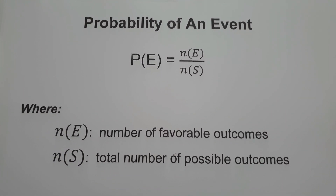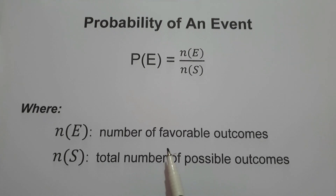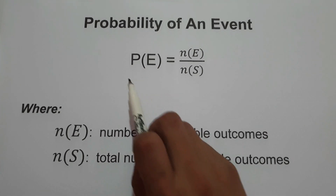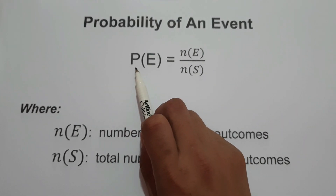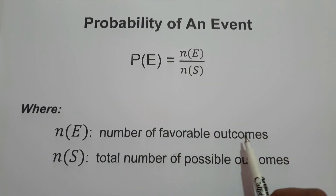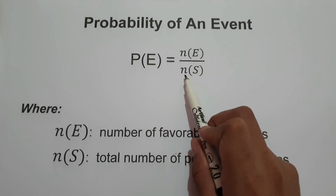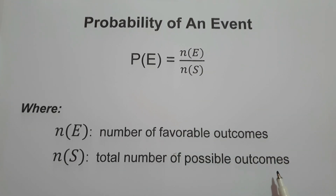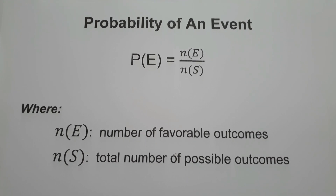Welcome to another video. In this video, we are going to talk about what is a probability of an event. When we say probability of an event, that is the number of favorable outcomes divided by the total number of possible outcomes. So the formula is P of E — probability of an event — equals N of E, the number of favorable outcomes, divided by N of S, the total number of possible outcomes. This will be the formula we are going to use to answer questions with regards to probability of an event.